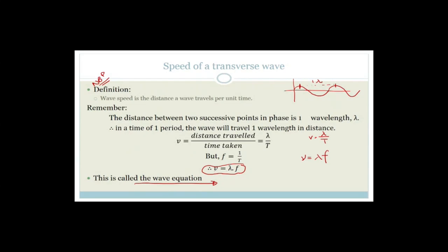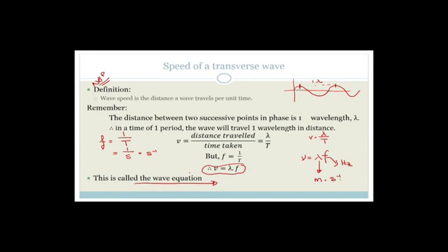If they say 'use the wave equation,' that's what they're referring to: v = λf. The wavelength is measured in metres (SI unit for distance) and frequency in Hertz. Hertz is 1/seconds = s⁻¹, so metres × s⁻¹ gives metres per second — the correct unit for velocity. So velocity equals lambda times frequency, and that's the wave equation.